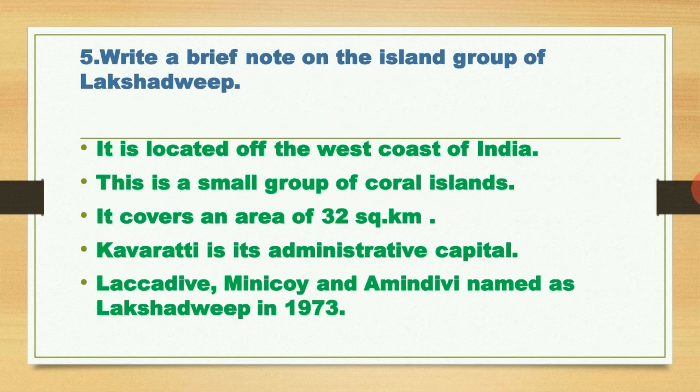Next question: write a brief note on the island group of Lakshadweep. For India there are two island groups: the Andaman and Nicobar island group, situated in the Bay of Bengal, and the Lakshadweep island group, situated in the Arabian Sea. Lakshadweep is located off the west coast of India. It is a small group of coral islands, very famous for corals, and covers an area of 32 square kilometers.